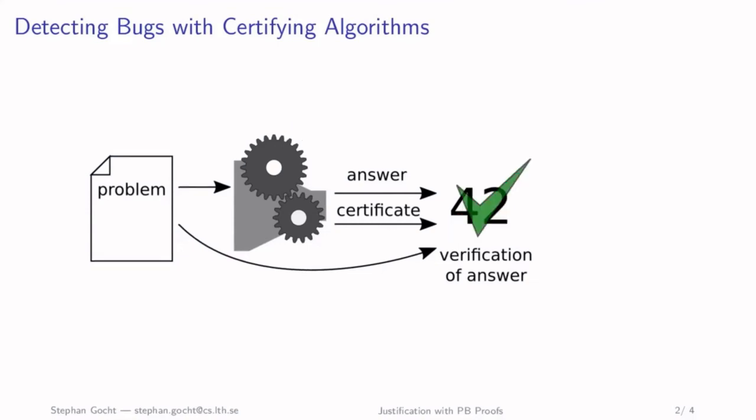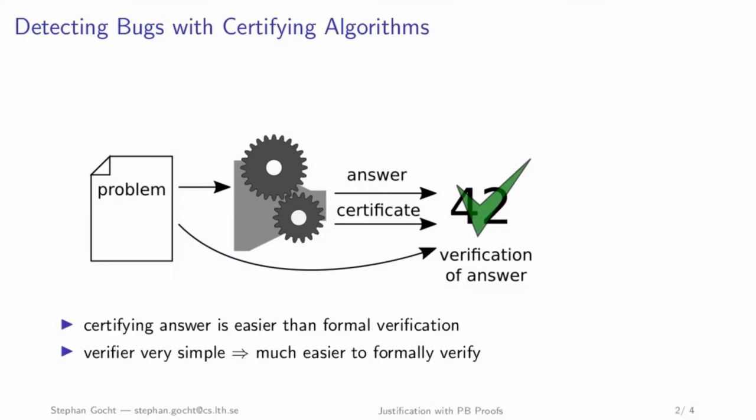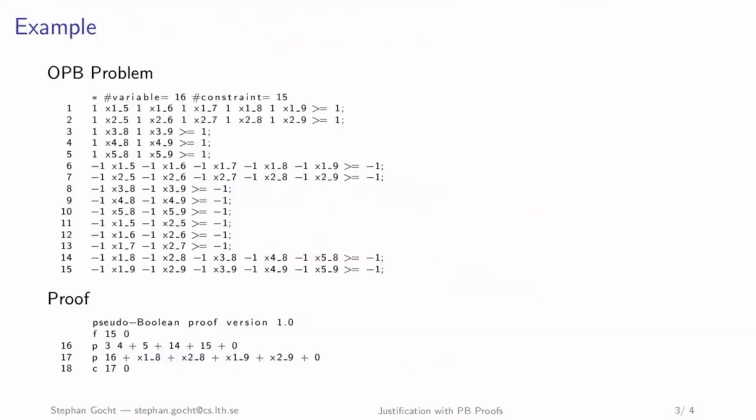Certifying an answer is much easier than formal verification of your full solver, and the verifier is also much simpler than the solver, so the verifier might actually be formally verifiable — we didn't do this yet but it's on our list. In the OPB format, which uses pseudo-boolean constraints (linear inequalities over zero-one variables), a variable like x15 encodes that x1 = 5, so we can have at-least-one or at-most-one constraints.